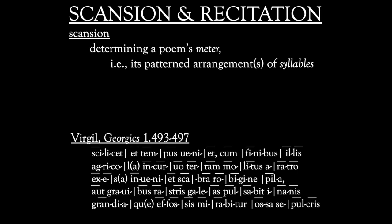In classical Latin poetry, scansion determines a poem's meter by identifying syllables as either long or short. In antiquity, the preferred concepts seem to have been rather heavy and light, but length and shortness capture more accurately what matters for the meter, especially for recitation.